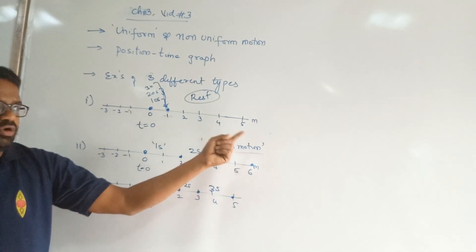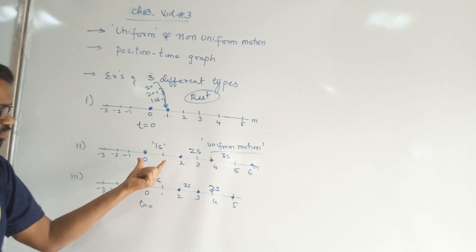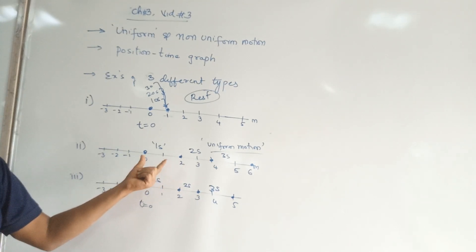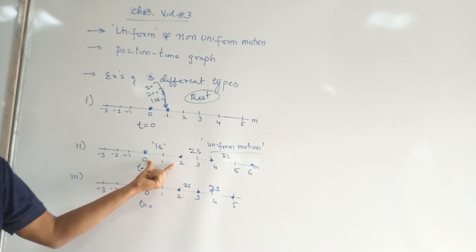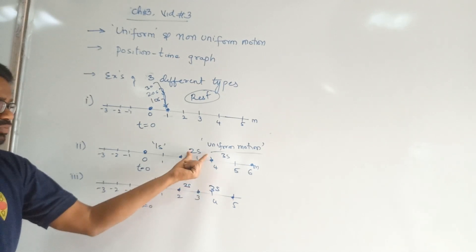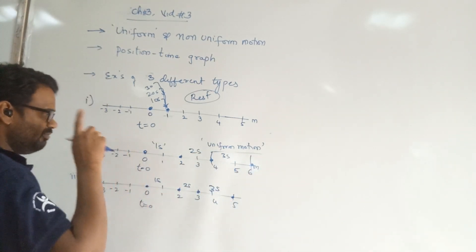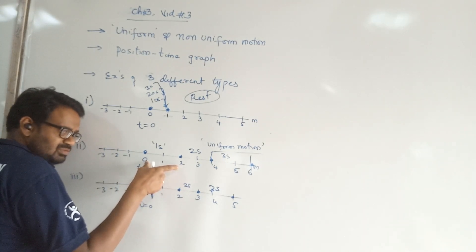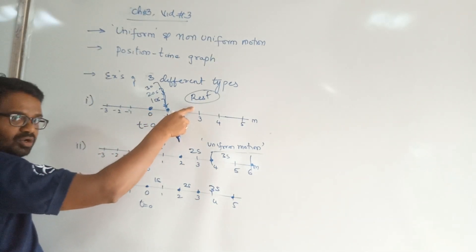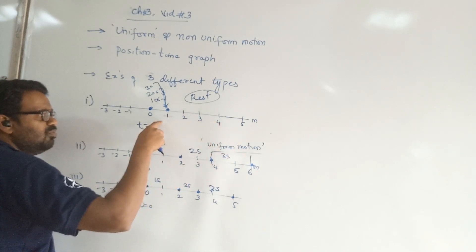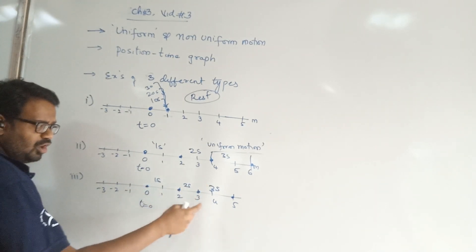Why do we call this uniform motion? Because the body is in motion, but in such a way that for equal intervals of time, the body undergoes an equal change of displacement. Equal changes of displacement in equal intervals of time — 2 meters per 1 second, 2 meters per the next second, 2 meters per the third second. If a body undergoes equal displacements in equal intervals of time, that is what we call uniform motion.